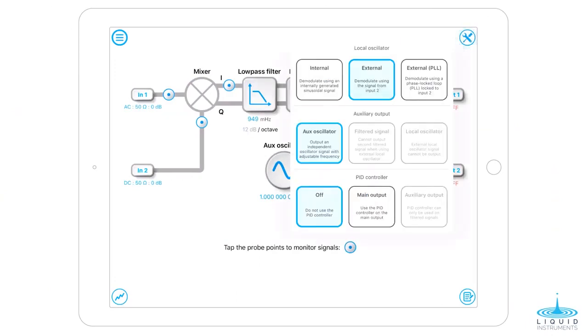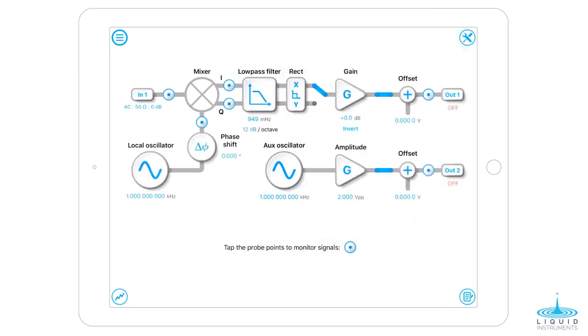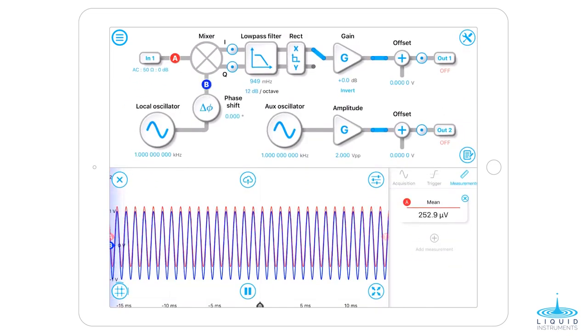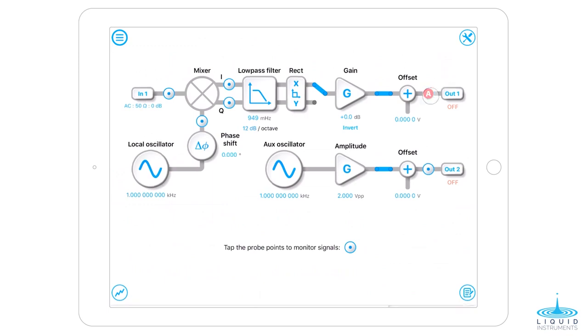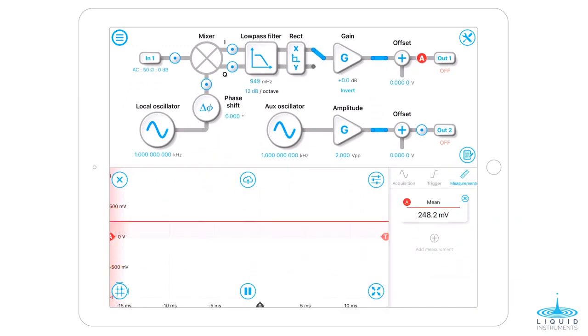Switch the local oscillator from external to internal. Then, enable the probe point before the mixer. We want to ensure the input signal and the local oscillator are in phase. Now, place a probe point at the lock-in output. The level, as you can see, is around 250 mV.